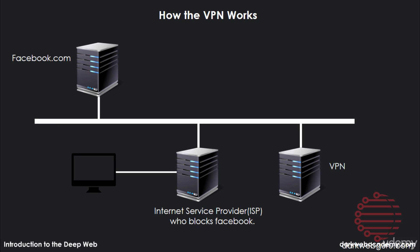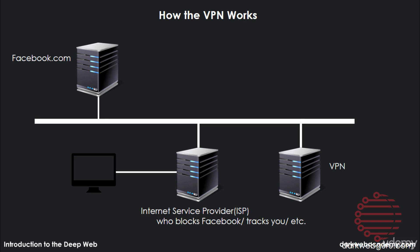Generally, a VPN works something like this: instead of connecting directly to Facebook, you would connect to your VPN first and then to Facebook. This would help you if Facebook was blocked in your country — you would connect to a VPN in a country where Facebook isn't blocked, and then it would connect you to Facebook.